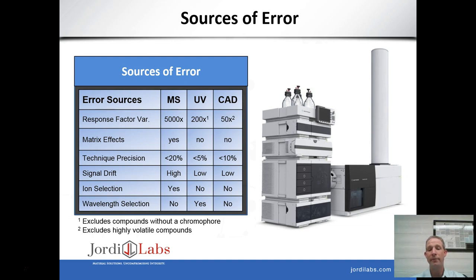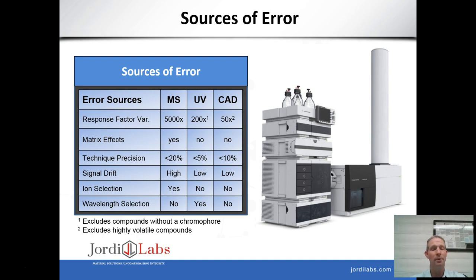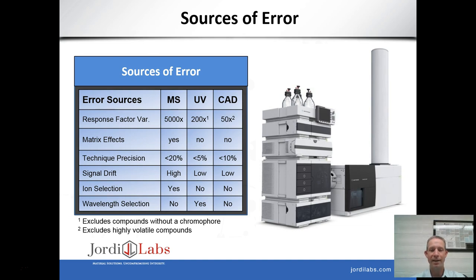Regarding signal drift, we see the most signal drift in MS over time. Ion selection is another problem to consider when doing MS relative quantitation — which ion adduct will you use? You can use the hydrogen adduct, the sodium adduct, or all ion adducts. You're not looking at the same ion as you would for formal quantitation, which is another problem with MS relative quantitation. For these reasons, MS is very problematic from a relative quantitation standpoint. And remember to consider UV wavelength when doing UV relative quantitation, as that can also be a significant source of error.